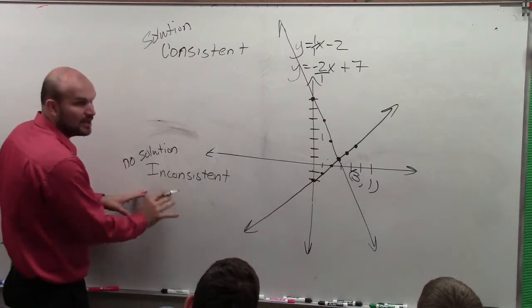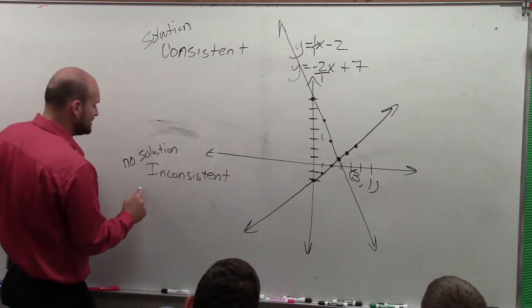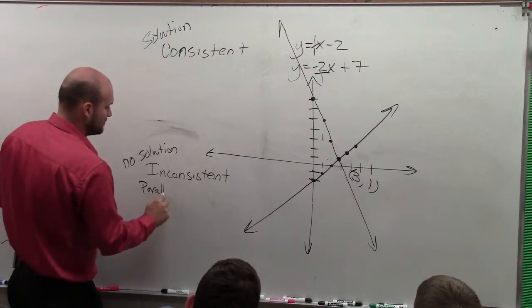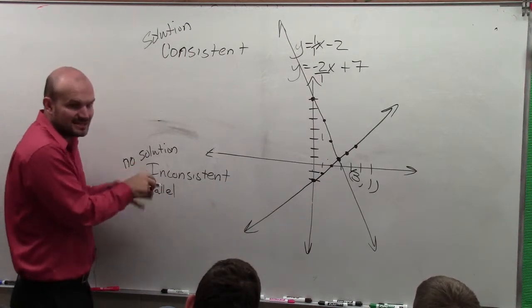Parallel. Parallel. So when you have parallel lines, it's what we call inconsistent. It's an inconsistent system.